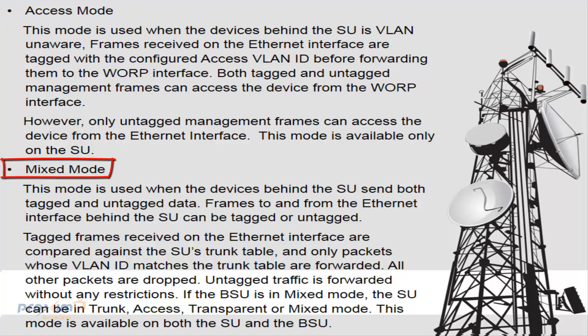Mix mode is used when the device behind the SU sends both tagged and untagged data. Frames to and from the Ethernet interface behind the SU can be tagged or untagged. Tagged frames received on the Ethernet interface are compared against the SU's trunk table, and only packets whose VLAN ID matches the trunk table are forwarded. All other packets are dropped. Untagged traffic is forwarded without any restrictions. If the BSU is in mixed mode, the SU can be in trunk, access, transparent, or mixed mode. This mode is available on both the SU and the BSU.